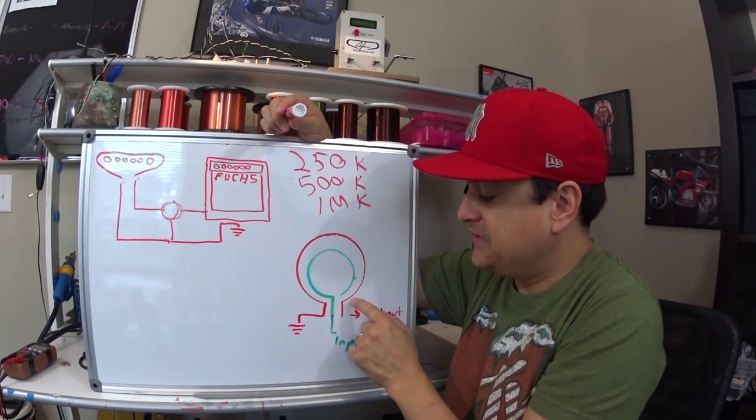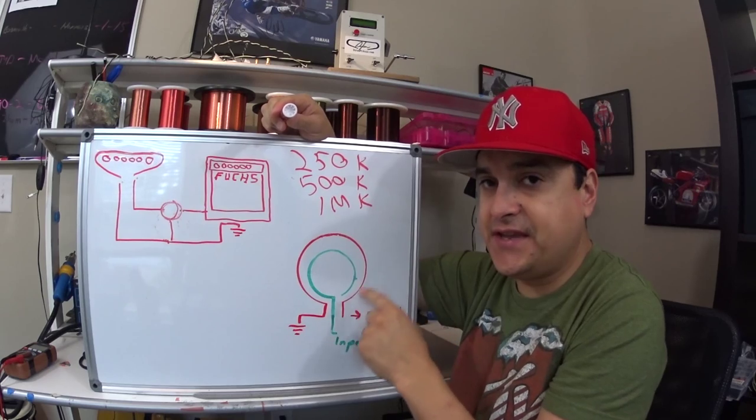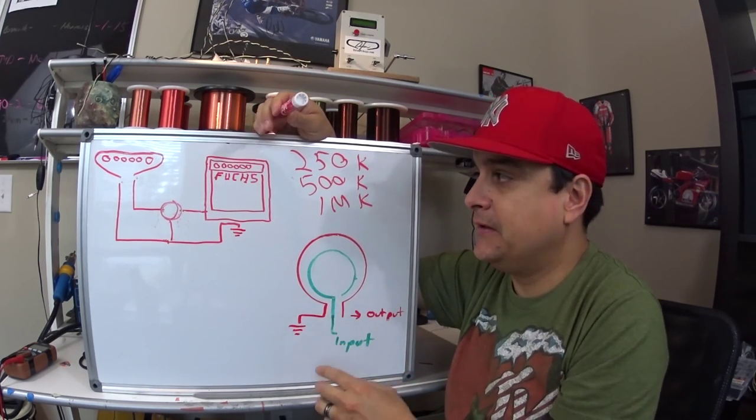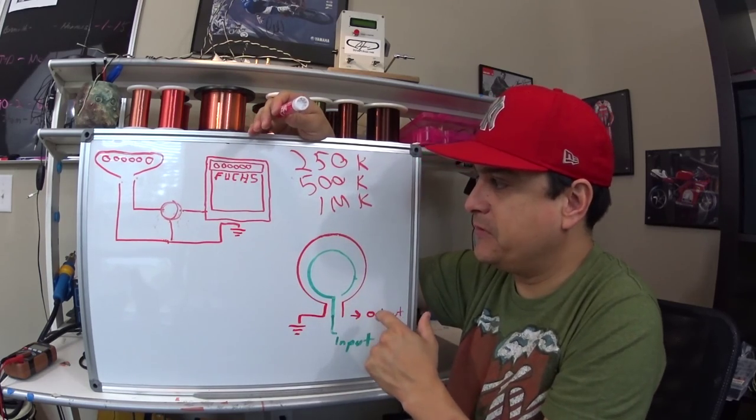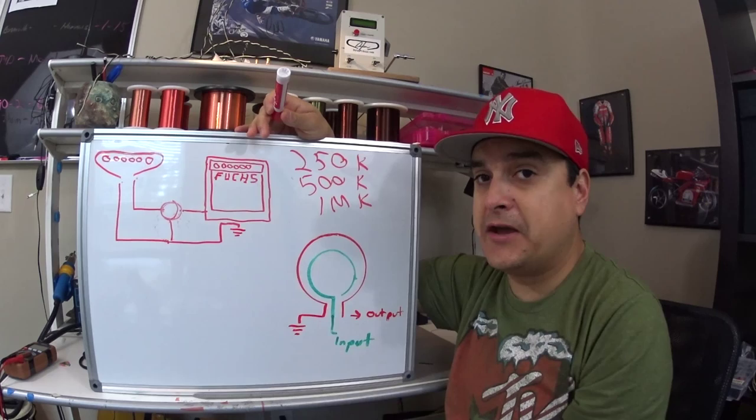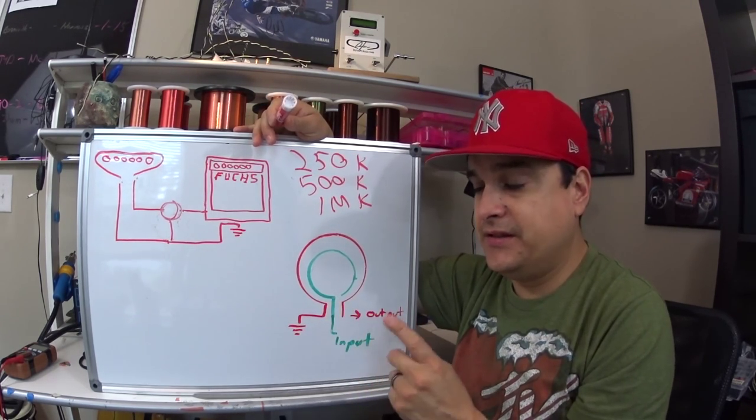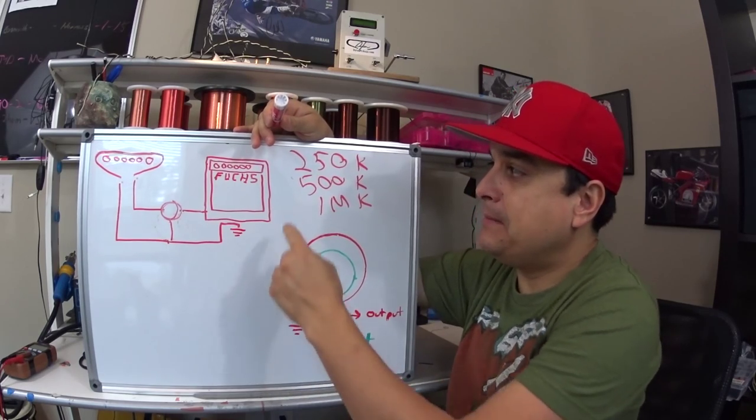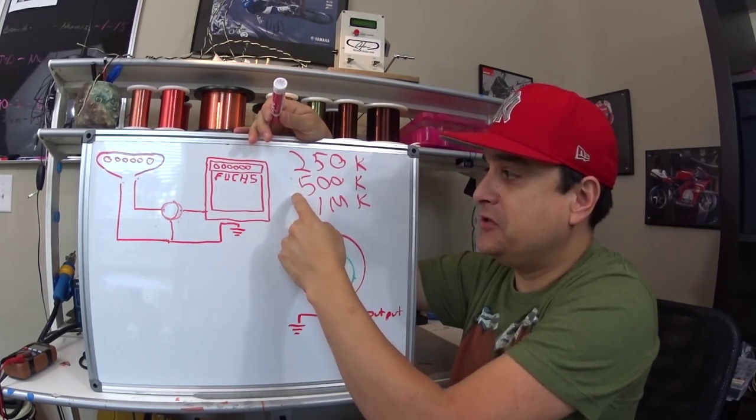Now, the resistance that this whole thing starts with is set by the value of the resistor that is this outer ring. 250k, 500k, 1 megaohm depending on your selection of potentiometer. Now, why does it matter, why does it matter which one you pick?